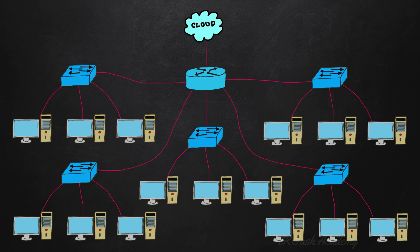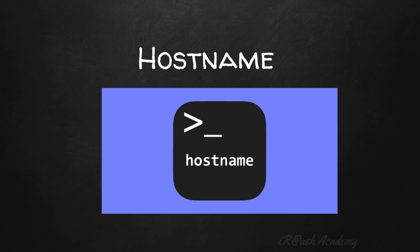Now apply the concept of the classroom into a computer network. In a computer network there will be a lot of network devices or computers connected to that network - same as the students in a classroom. There may be hundreds of network devices in a large network. Just as students were identified by their unique names, network devices are identified with the help of a hostname. Each device in the network will have one unique name called the hostname.